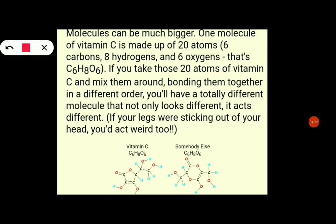In vitamin C, many atoms join together to form the molecule. The elements in a vitamin C molecule are carbon, hydrogen, and oxygen — carbon has 6, hydrogen has 8, and oxygen has 6, making a total of 20 atoms.